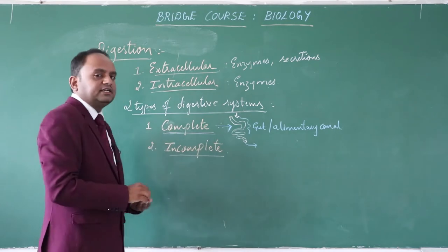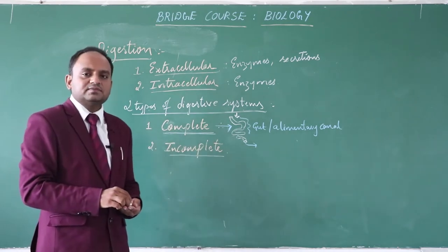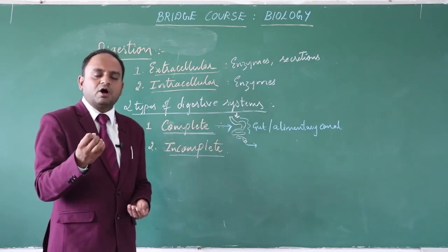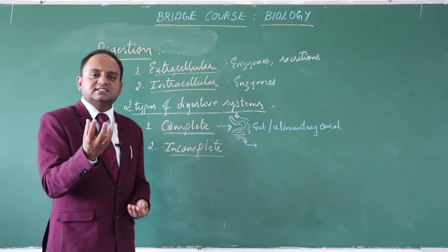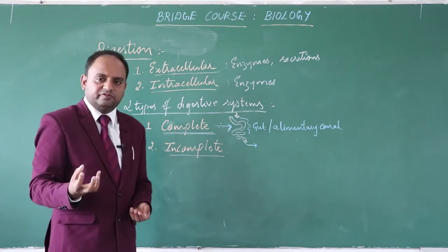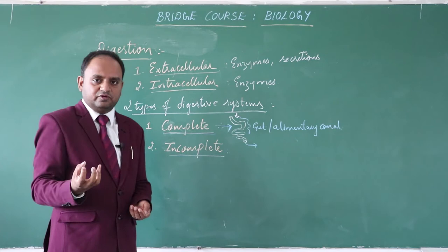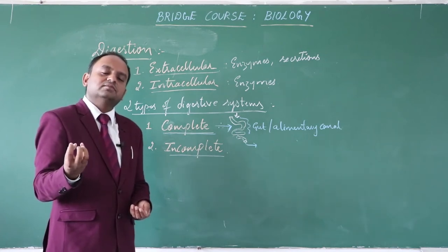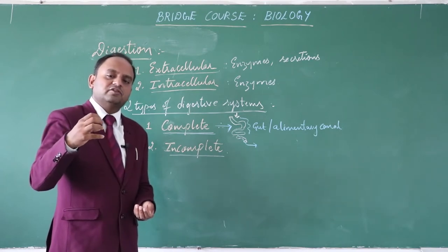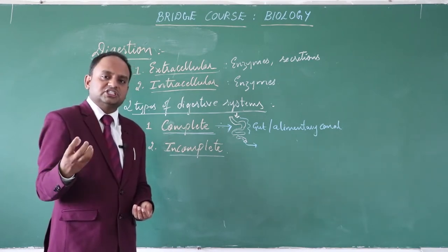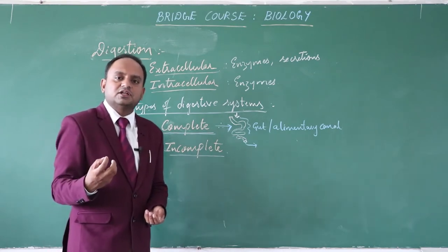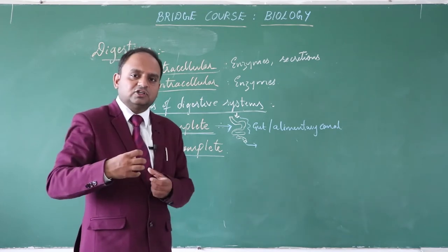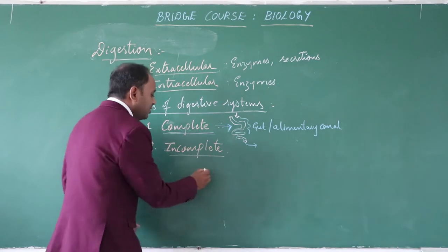In an incomplete digestive system, the organism has only one opening. That same opening acts as both mouth and anus — it is used to consume food and, after digestion and absorption of nutrients, the toxic waste material is also thrown out from the same opening.